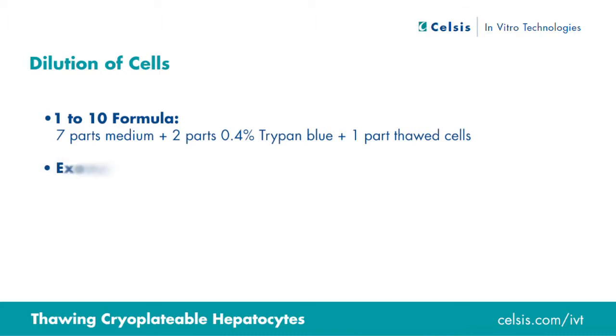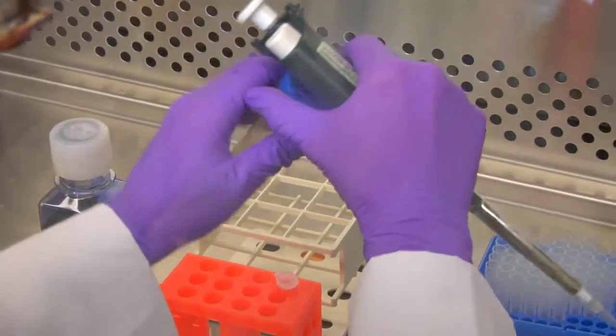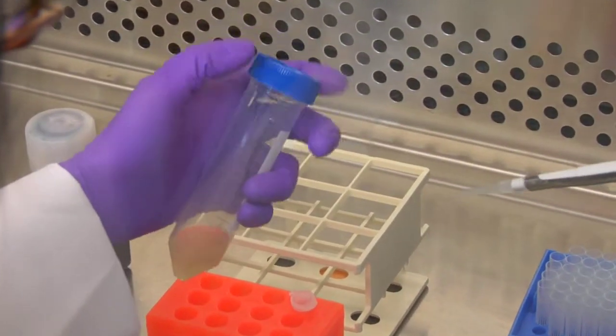An example of this 1 to 10 dilution is 700 microliters of InVitroGRO CP medium for cryoplateable cells, 200 microliters of 0.4% trypan blue, and 100 microliters of thawed cells. Mix and incubate at room temperature for one minute. Be sure to mix the cell suspension thoroughly before taking an aliquot. The cells are ready to be counted.